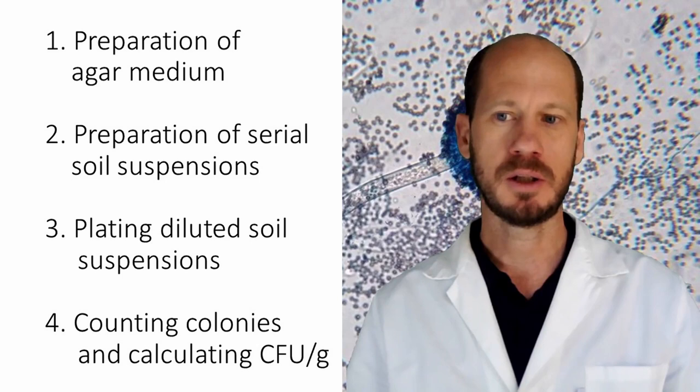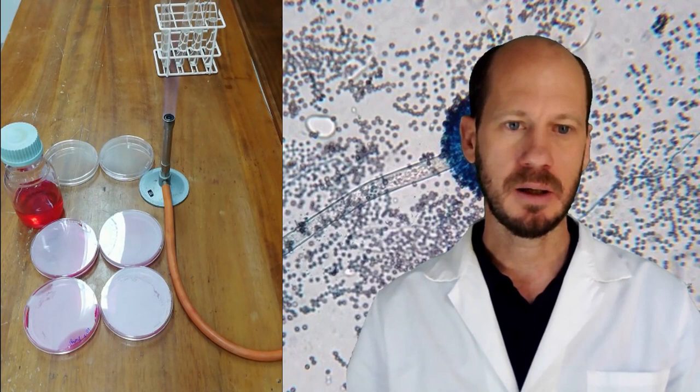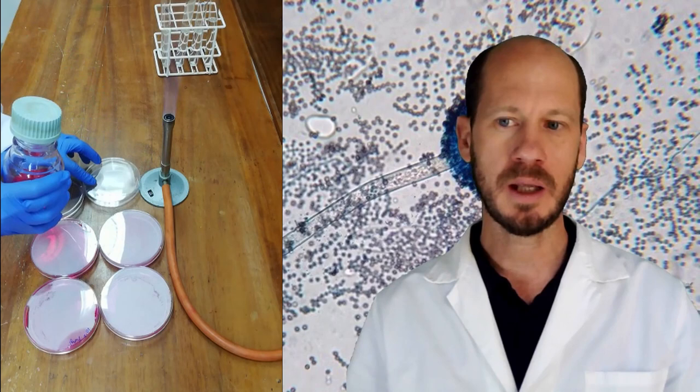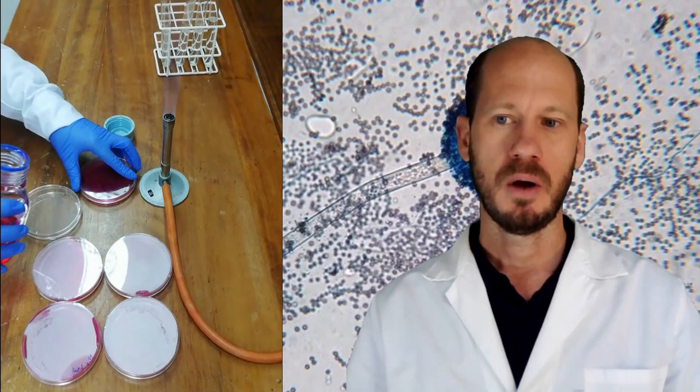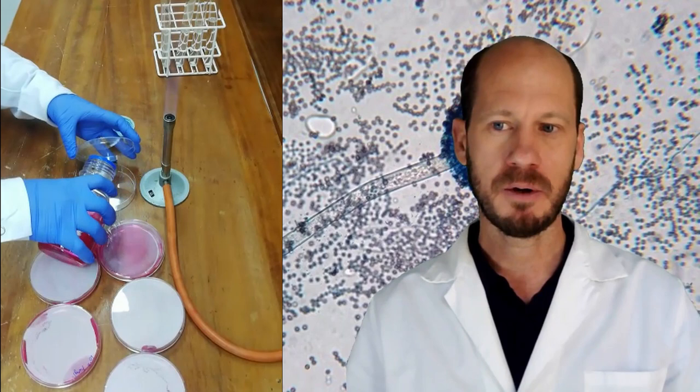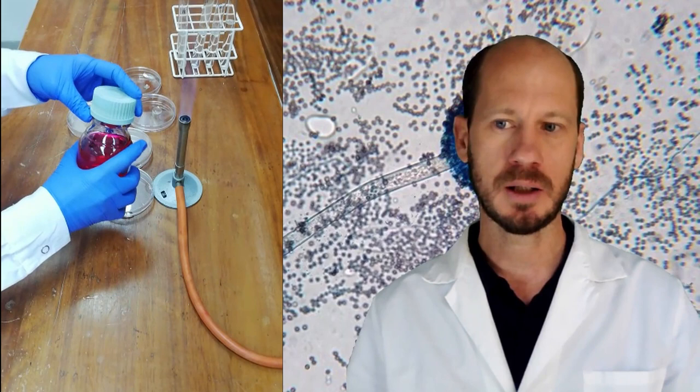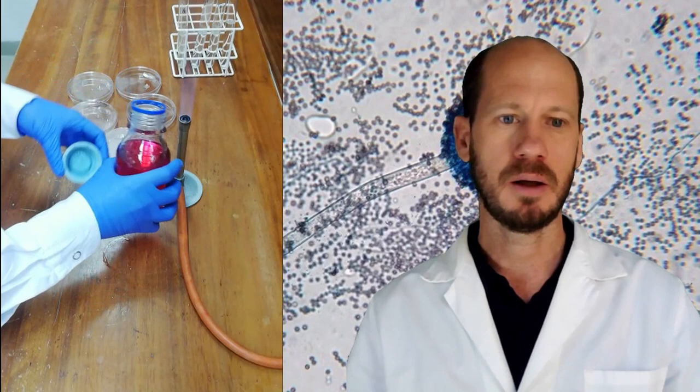Here on my right you will see the plates that have been prepared. We have three types of medium. We have glycerol casein agar for actinomycetes — actinomycetes are a group of gram-positive bacteria — and we have a general medium for bacteria which is tryptone yeast extract agar, and the medium for fungi will be rose bengal agar. This is the preparation of the medium.